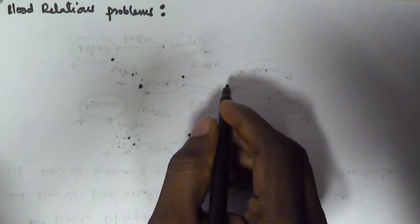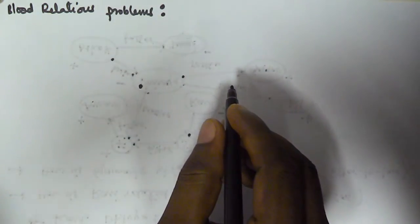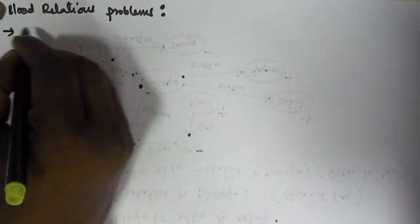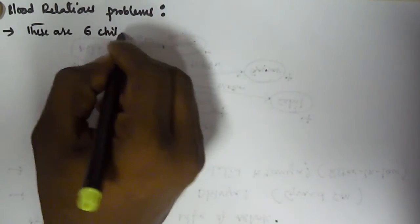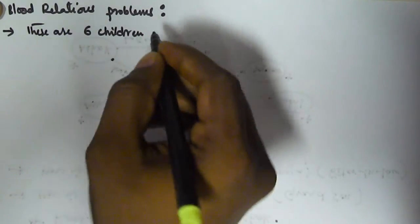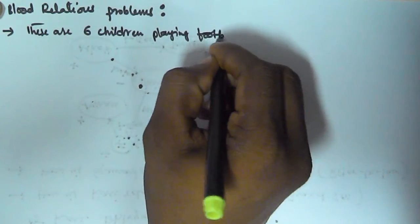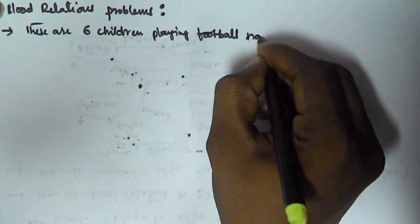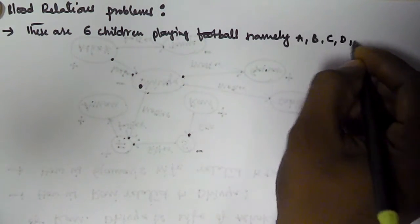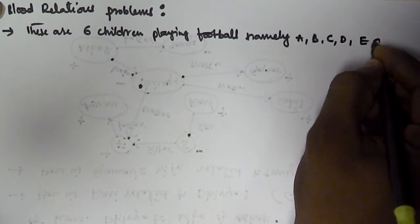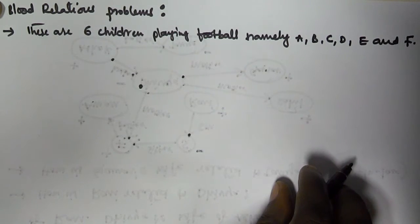Hello friends. In this video we will see another problem based on blood relations. The problem is: there are six children playing football, namely A, B, C, D, E, and F.